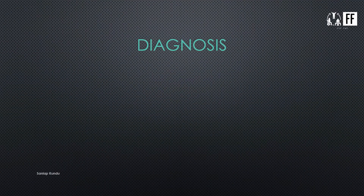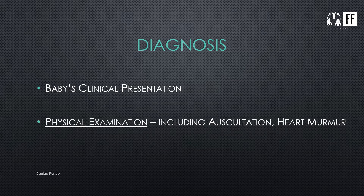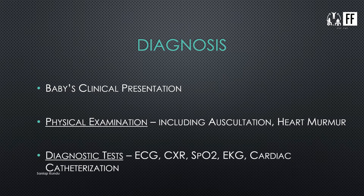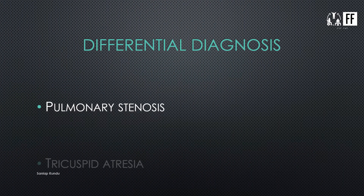To diagnose TOF, you first need to check the baby's clinical presentation, including all the clinical features mentioned earlier. Then physical examination includes auscultation and detecting any heart murmur. Diagnostic tests include ECG, chest X-ray, SpO2, EKG, and cardiac catheterization. The differential diagnosis includes pulmonary stenosis and tricuspid atresia.